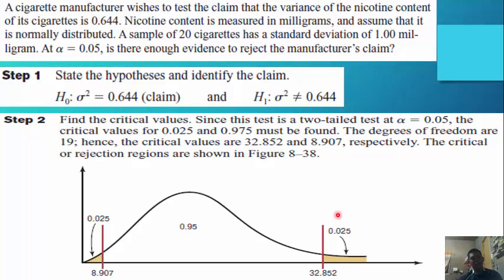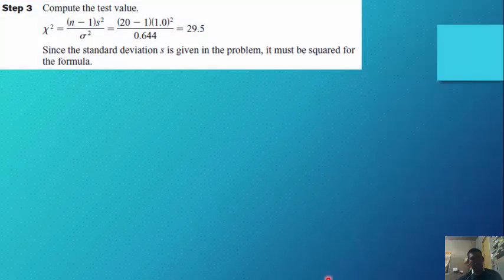Step 2: Find the critical values. The test is two-tailed at alpha of 0.05, so critical values for 0.025 and 0.975 must be found. The degrees of freedom are 19. The critical values are 32.852 and 8.907 respectively, with rejection regions shown in the figure at 8.907 and 32.852.